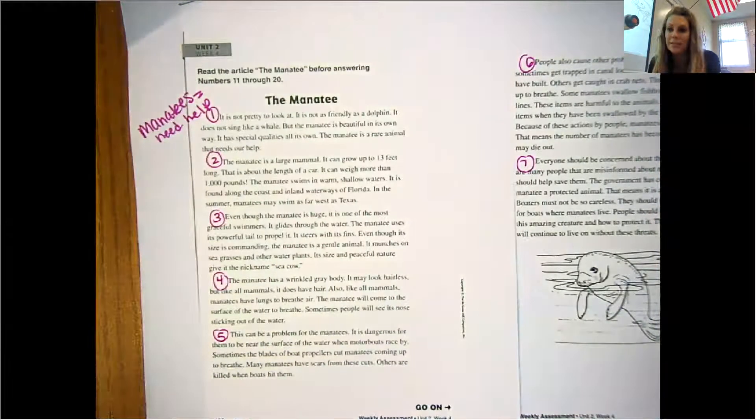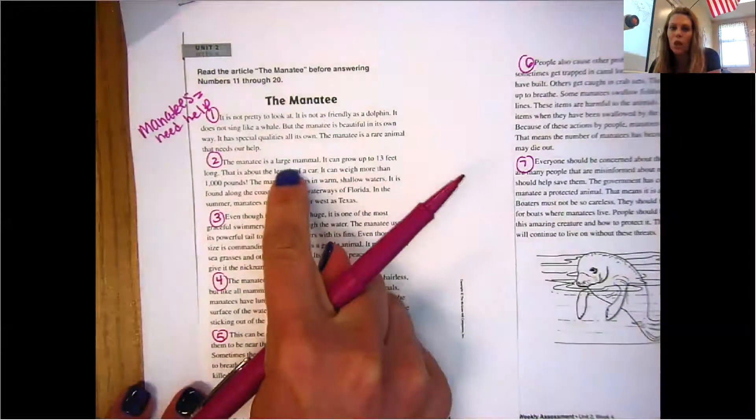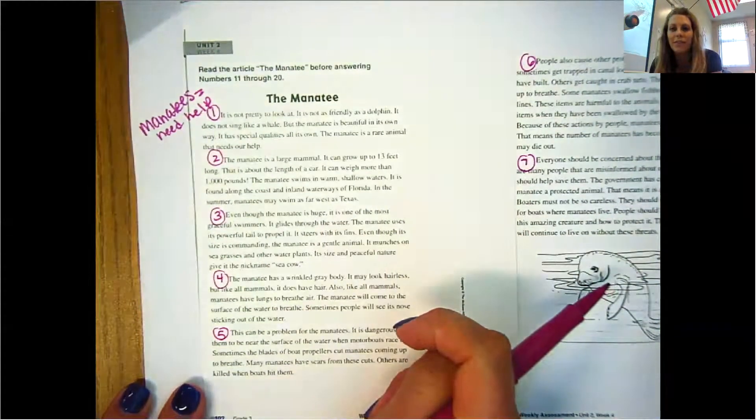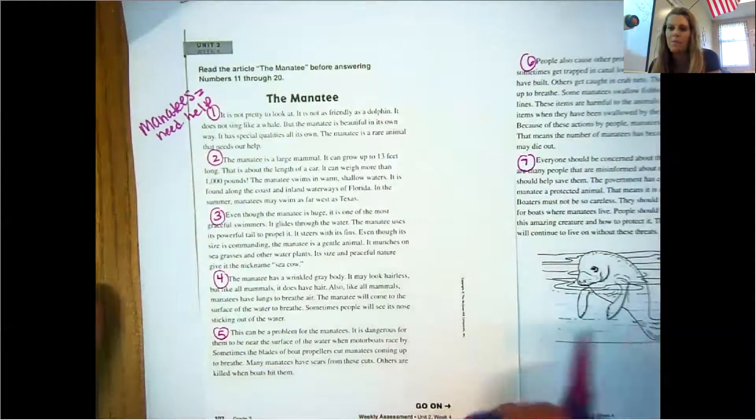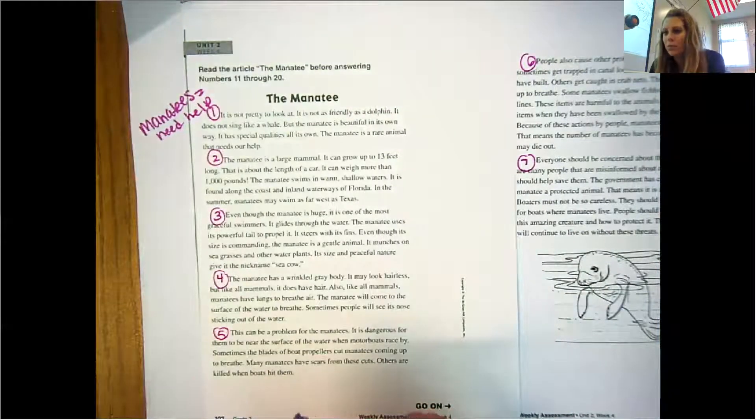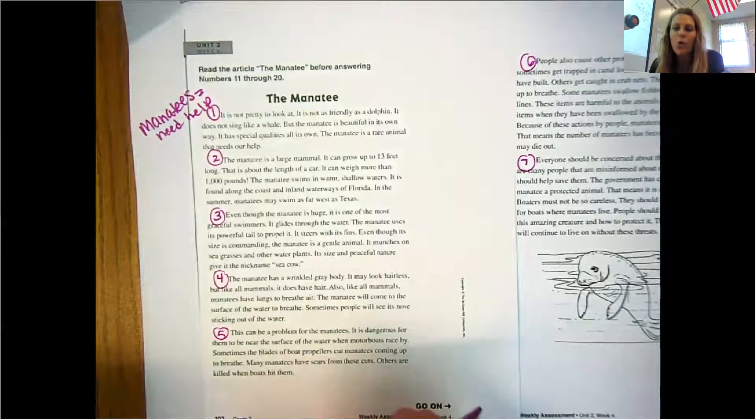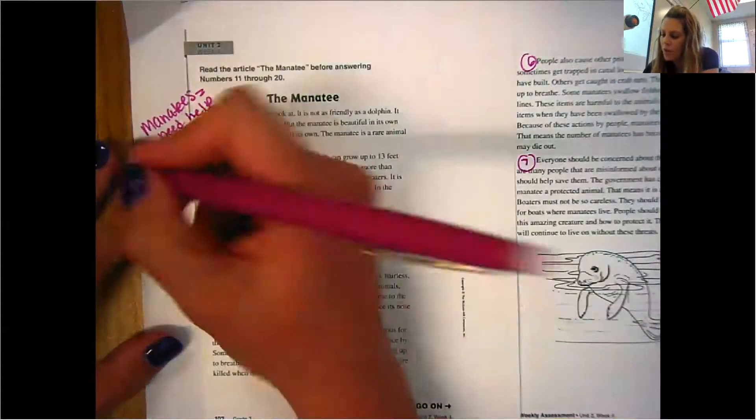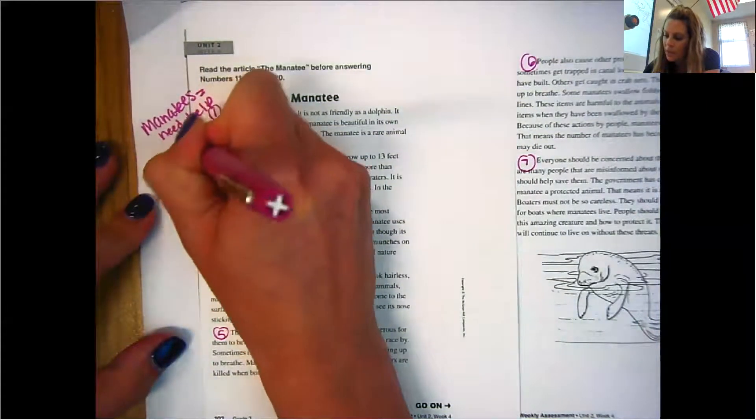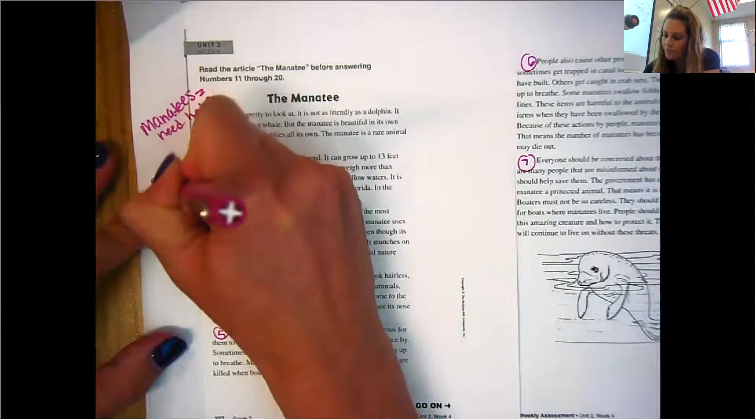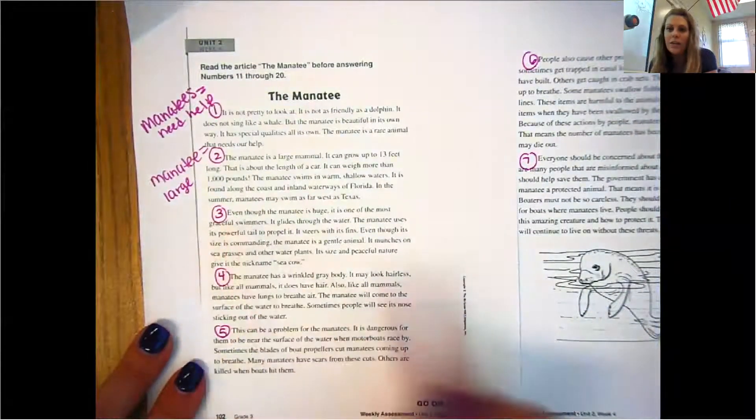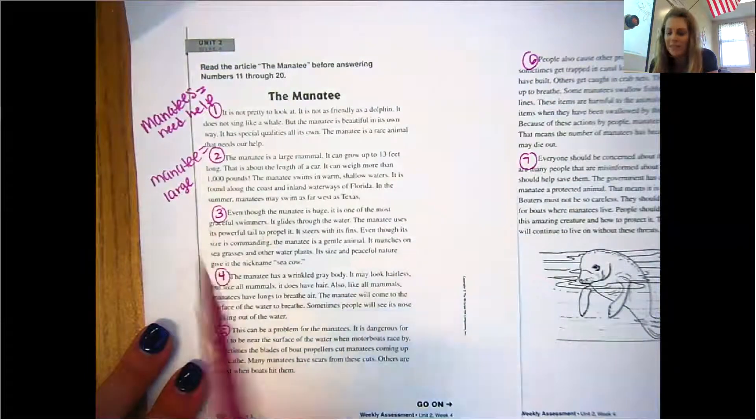So this paragraph talked about two things. It talked about manatees being large mammals, and it talked about where they live. So you could have written something about where manatees live, manatees equals large animal, whatever you want. So I'm going to put manatee equals large, okay? So that I know if I need to go back, I can find it in that paragraph.